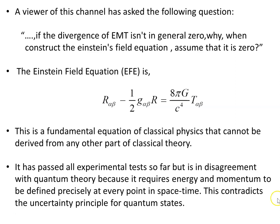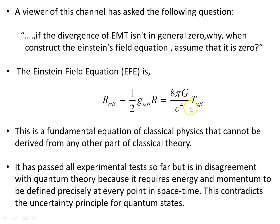There's a little bit of a misunderstanding here, so let's start from the beginning. The Einstein field equation has on the left the part that reflects the curvature, and on the right the part that describes the distribution of energy and momentum — the energy density on one side and the curvature on the left. This is a fundamental equation of classical physics that cannot be derived from any other part of classical theory. It's a statement of how curvature is related to the distribution of matter and energy, and how matter and energy curve space-time.